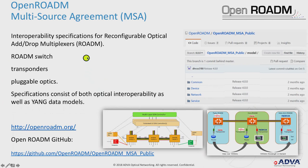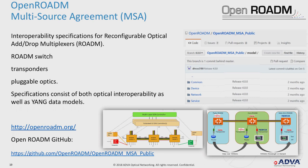OpenROADM goes further, defining everything in detail with multi-source agreements and technical specifications for all network elements, with data models constantly updated — the latest being Release 4 from October of this year, roughly two months ago. They are so closely tied to technology that each technology advance requires a model update. Earlier models were not suitable for FlexGrid, requiring updates, but now the OpenROADM model appears more comprehensive than OpenConfig.